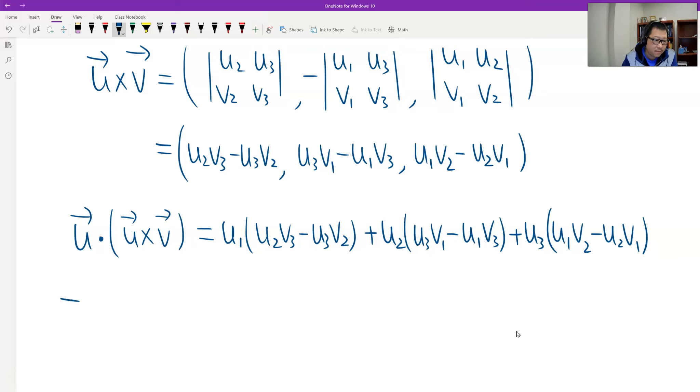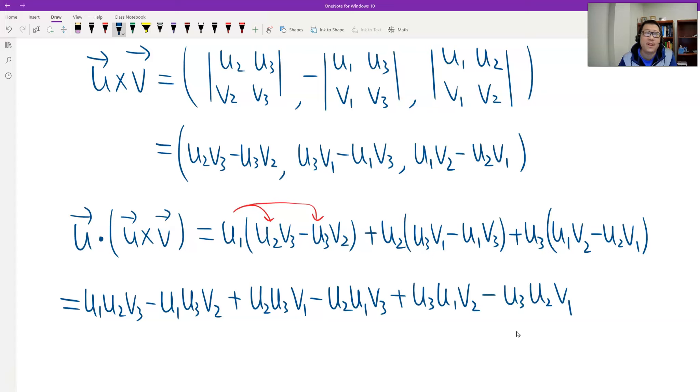And then we expand. See, distribute. It's easy. For each term we distribute, we should have six terms. So u1u2v3, the first. u1u3v2, the third. u2u3v1. The fourth, u2u1v3. The fifth, u3u1v2. The last, u3u2v1.